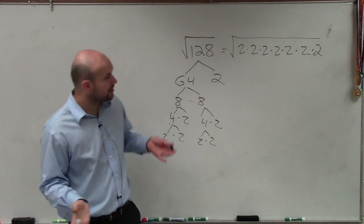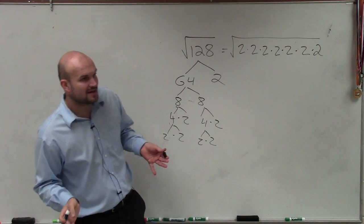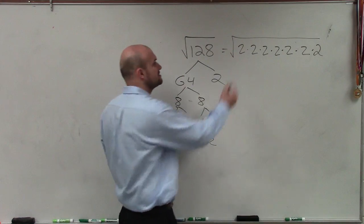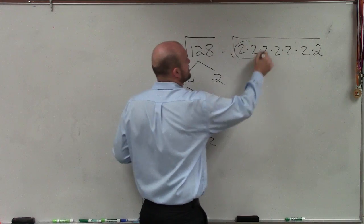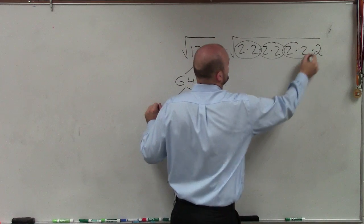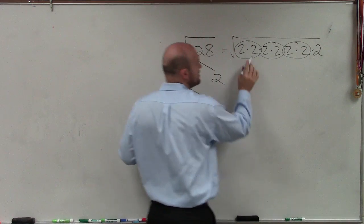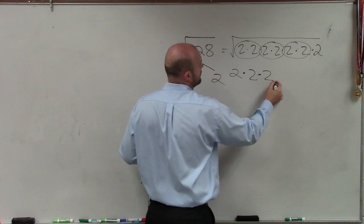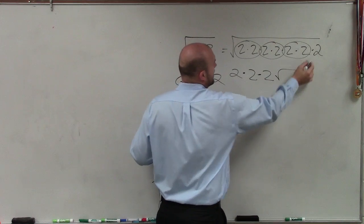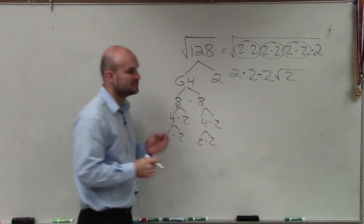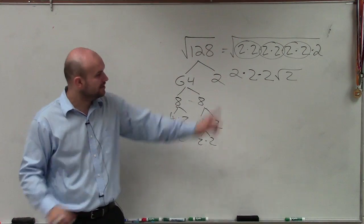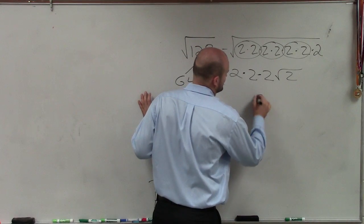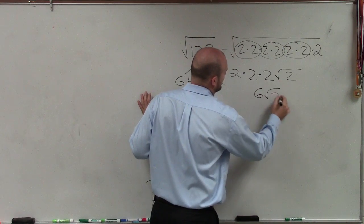Now when we're taking the square root using prime factorization, we want to take out pairs of numbers. So we're going to group pairs of 2's. I can take out three pairs of 2's. The last 2 does not have a pair, so it remains under the radical. 2 times 2 times 2 is 8, giving us 8 square root of 2.